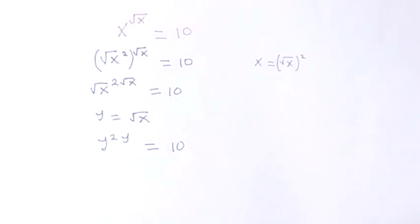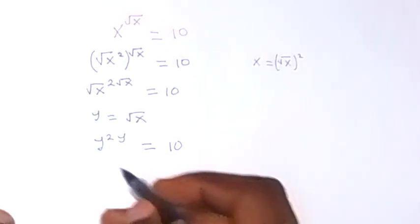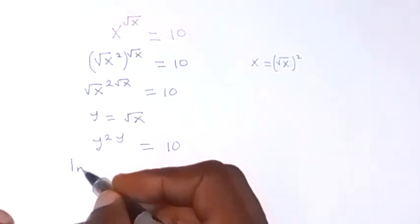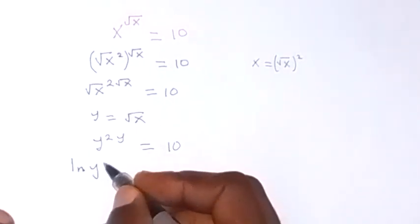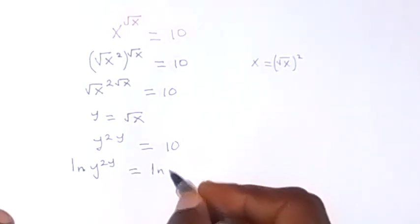Then from here, let's take the ln on both sides. When we take the ln on both sides, we have ln y raised to power 2y equals to ln 10.